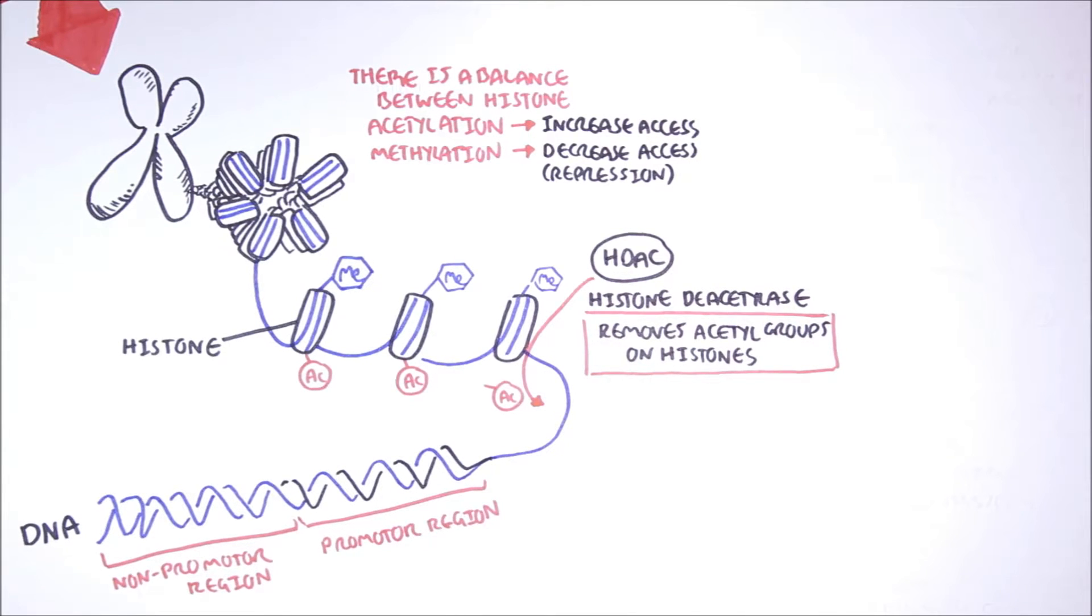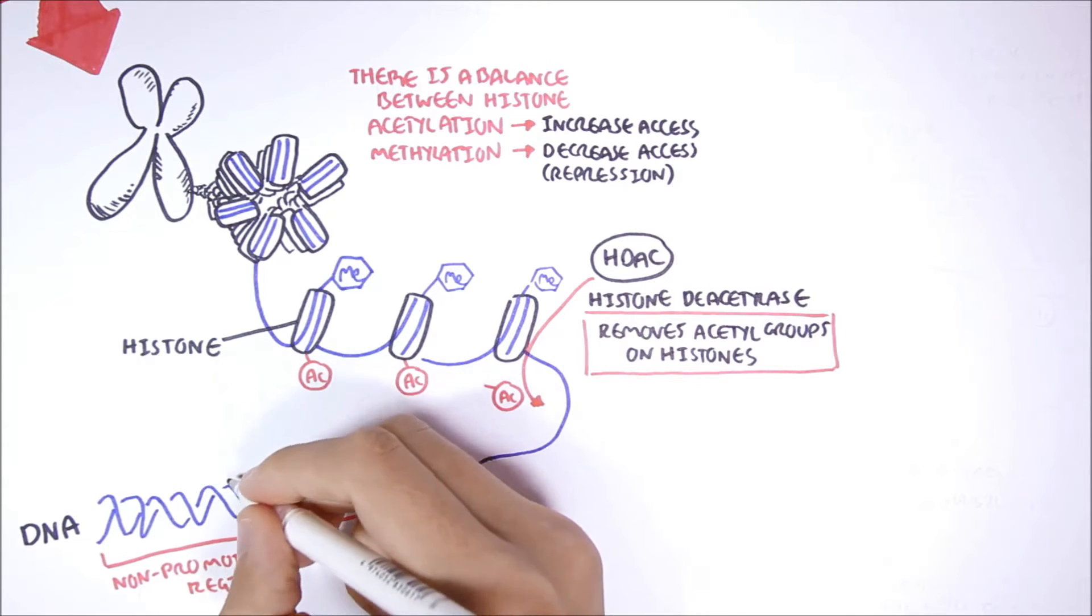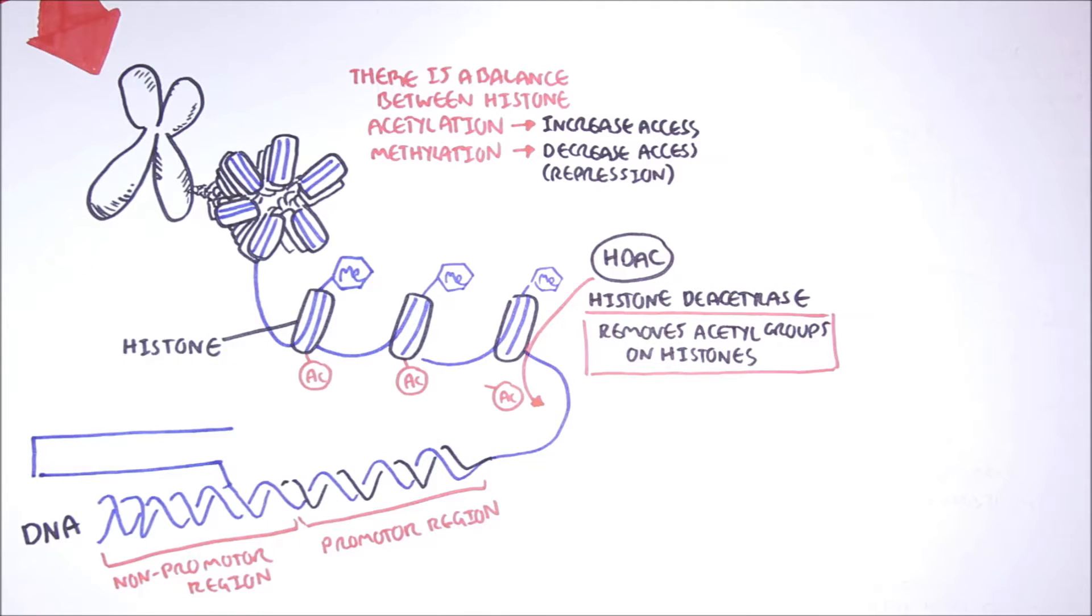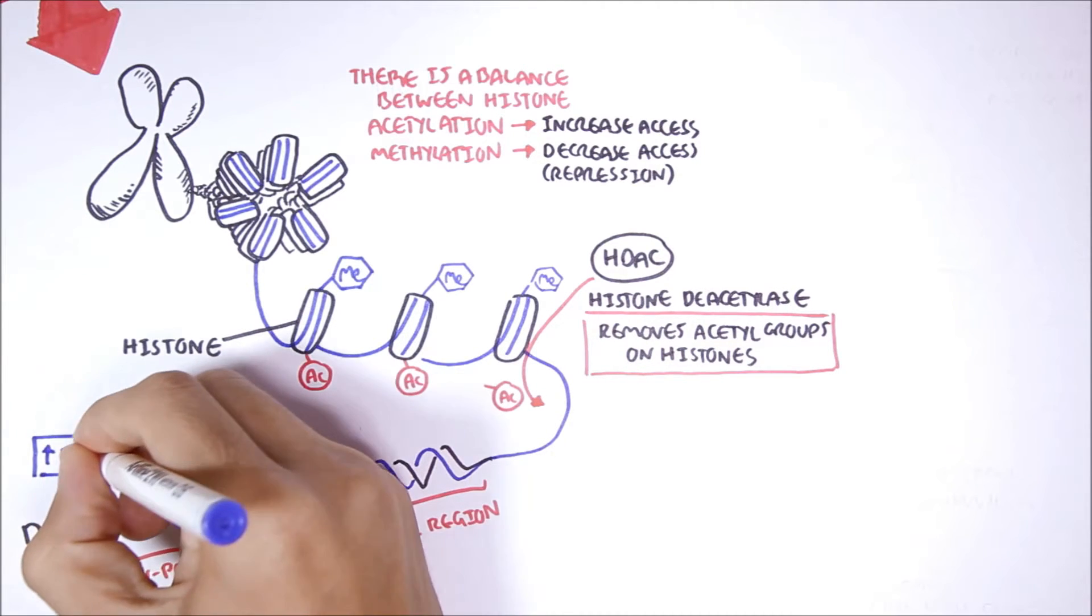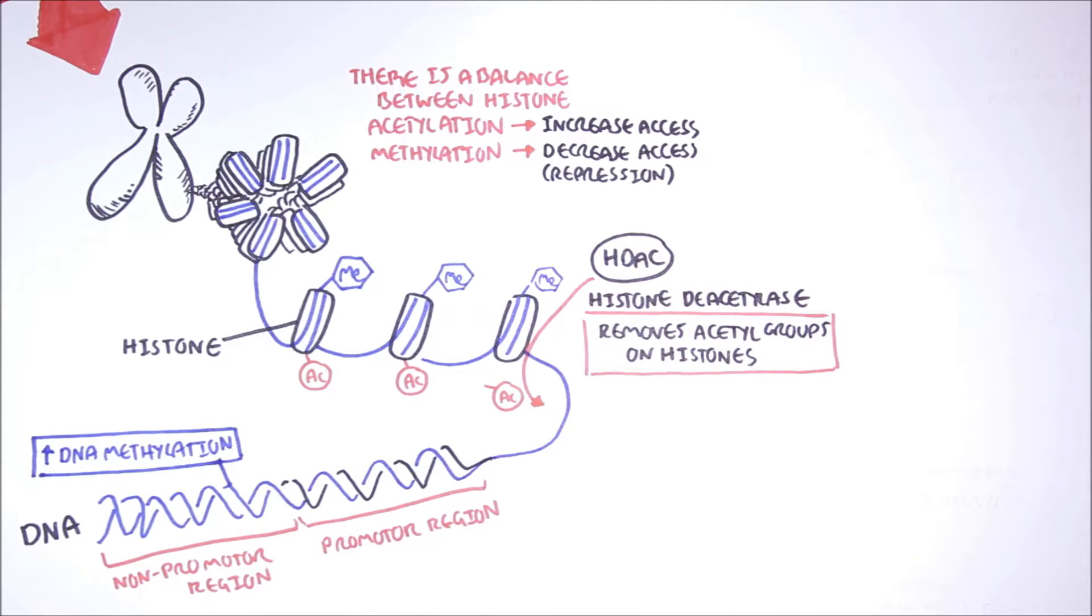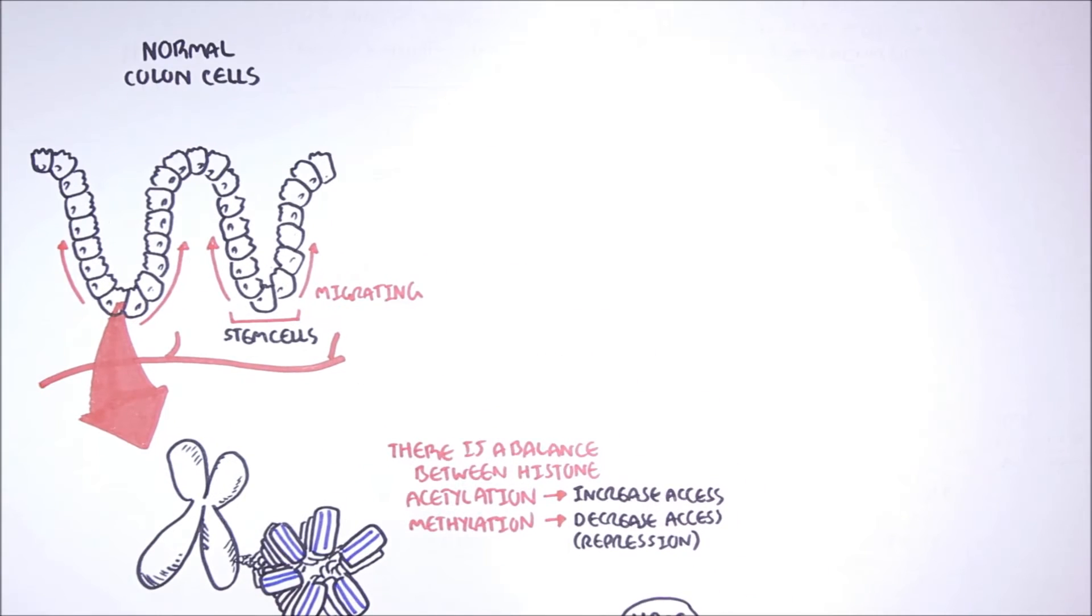In a normal colon cell, there is approximately 70 to 80% methylation in non-promoter regions. But around the promoter regions, genes are usually unmethylated. And this is so there is better access for transcription factors to activate genes. And we will see the changes that occur in methylation as cancer develops.